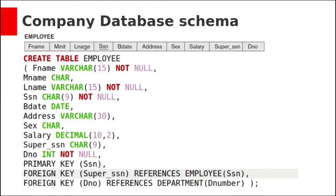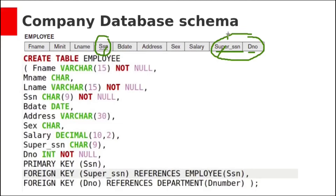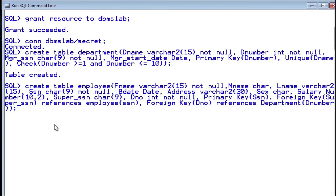Next, the employee table. It has attributes: first name, middle name, last name, SSN, birth date, gender, salary, super SSN, and dNum. Create table employee. First name and last name should not be null, so not null constraint is added. SSN is the primary key so it is also not null. Super SSN and dNumber are foreign keys. We define all these columns, then add the primary key constraint on SSN. Super SSN is a foreign key referencing SSN within the same employee table — a self-reference. Foreign key dNumber references department(dNumber). Table created.